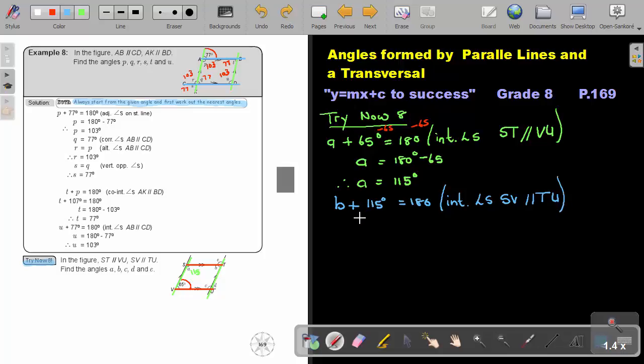Okay. Now we solve this and we find the value of B is 180 minus 115. And I will get, therefore, B equals 65 degrees.